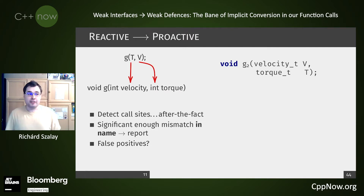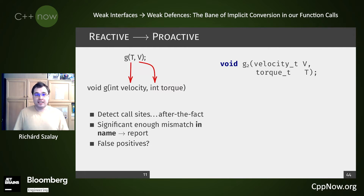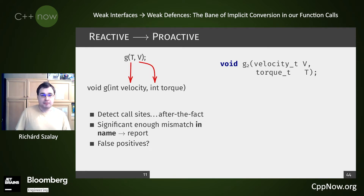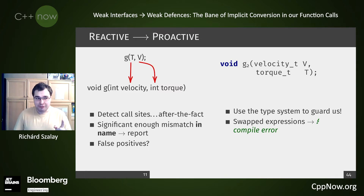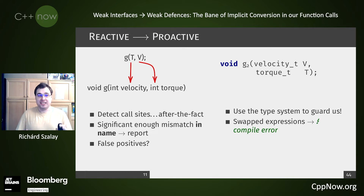What if instead we did something better? We are library developers — most of us write code that other people use. We can help those people not to make mistakes by using types. By using the type system to guard us, we can turn most of these swaps into compile errors. This is a funny slide I like, because in my experience this is the only slide where I can safely say that compile errors should be green — that's the good thing. We can express our intent cleanly.